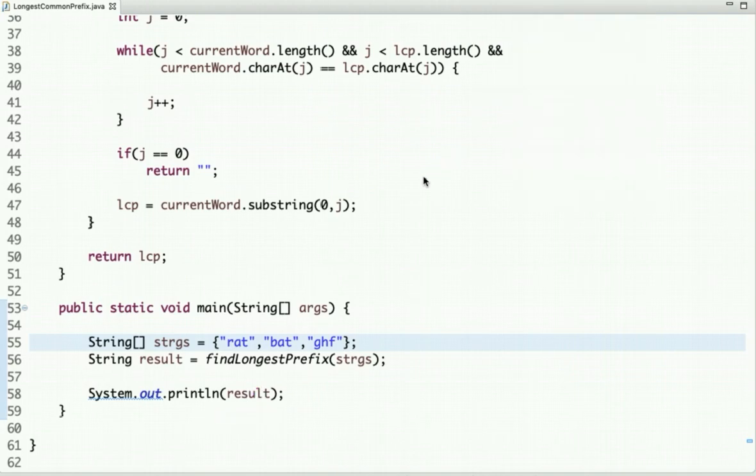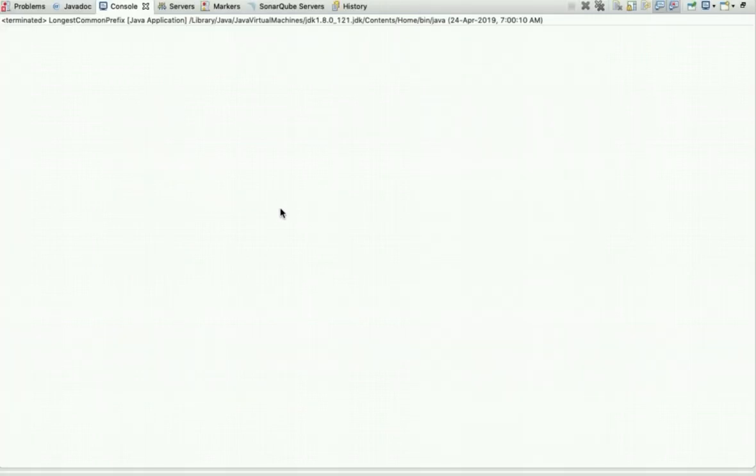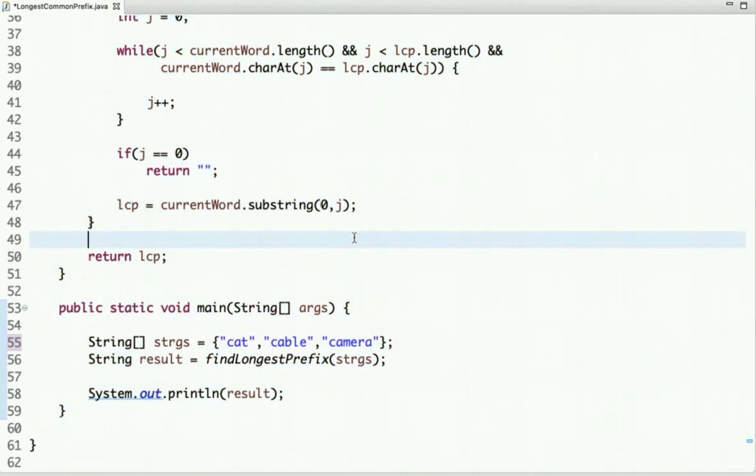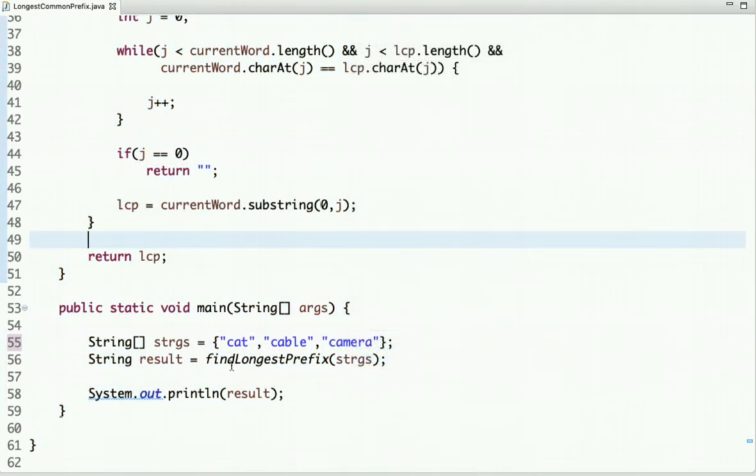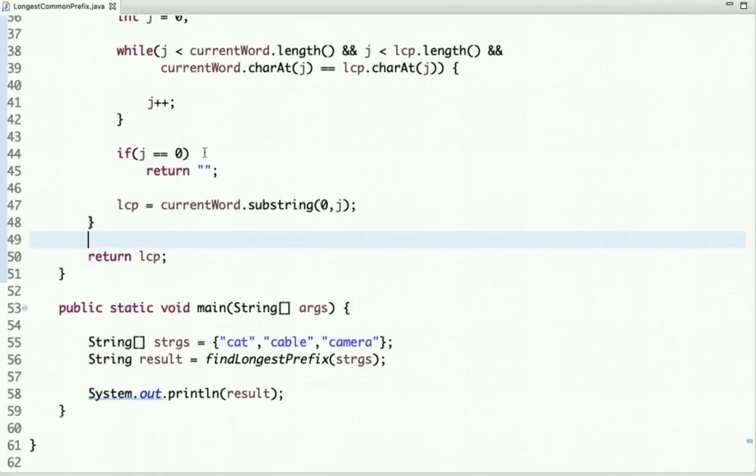So if I run this code, see there is no common prefix found among the strings. So let's change this word to 'cat', 'cable', and 'camera'. And let's run this code. So the common prefix is 'ca'.